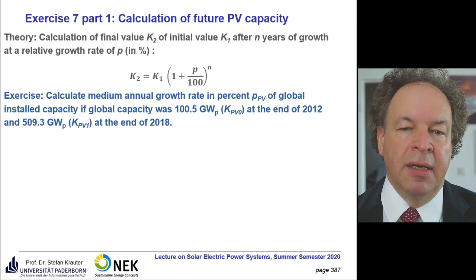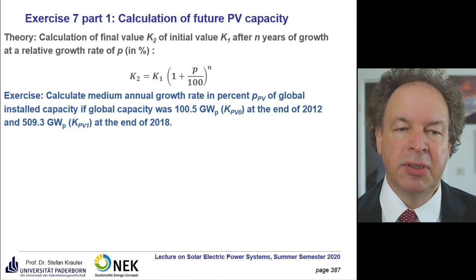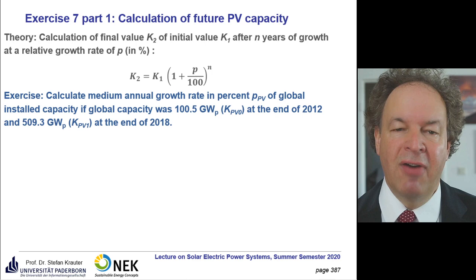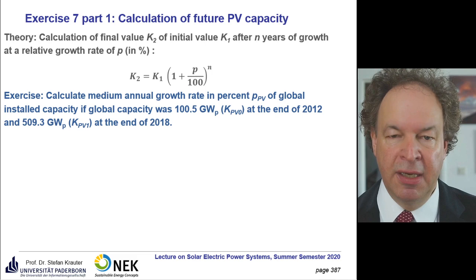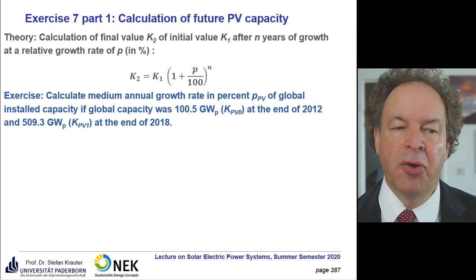Now we want to apply that to photovoltaics. We want to know the growth rate P — we don't know it, we just have some values. We know that in the year 2012 the global PV capacity installed has been 105 gigawatts under standard test conditions, and in the year 2018 the installed PV capacity has been 509.3 gigawatts.